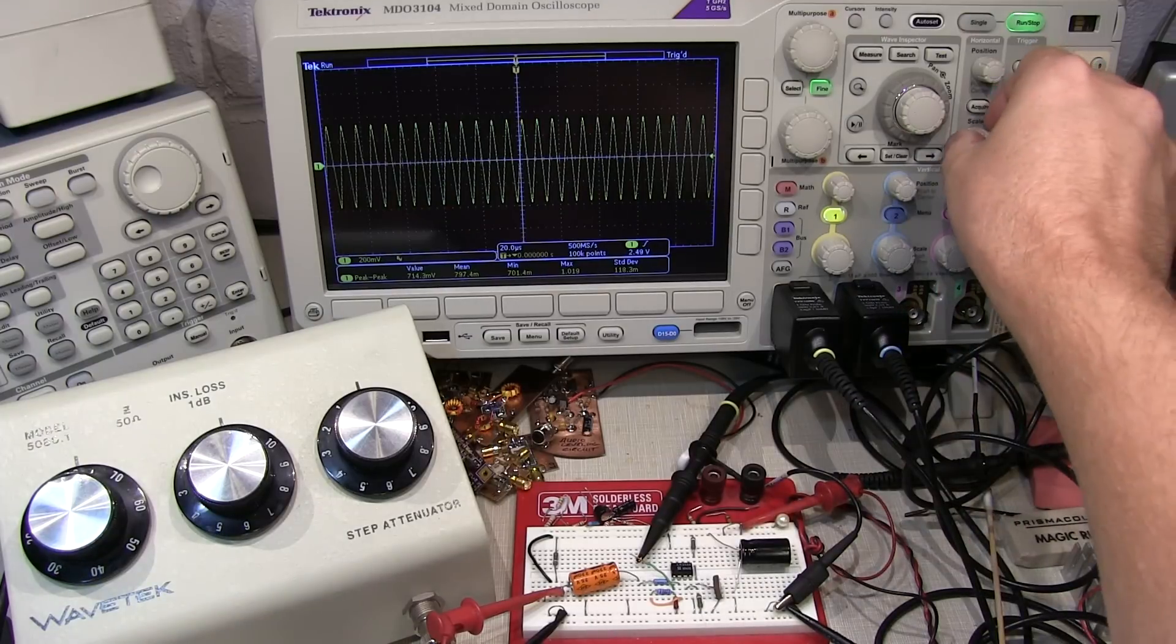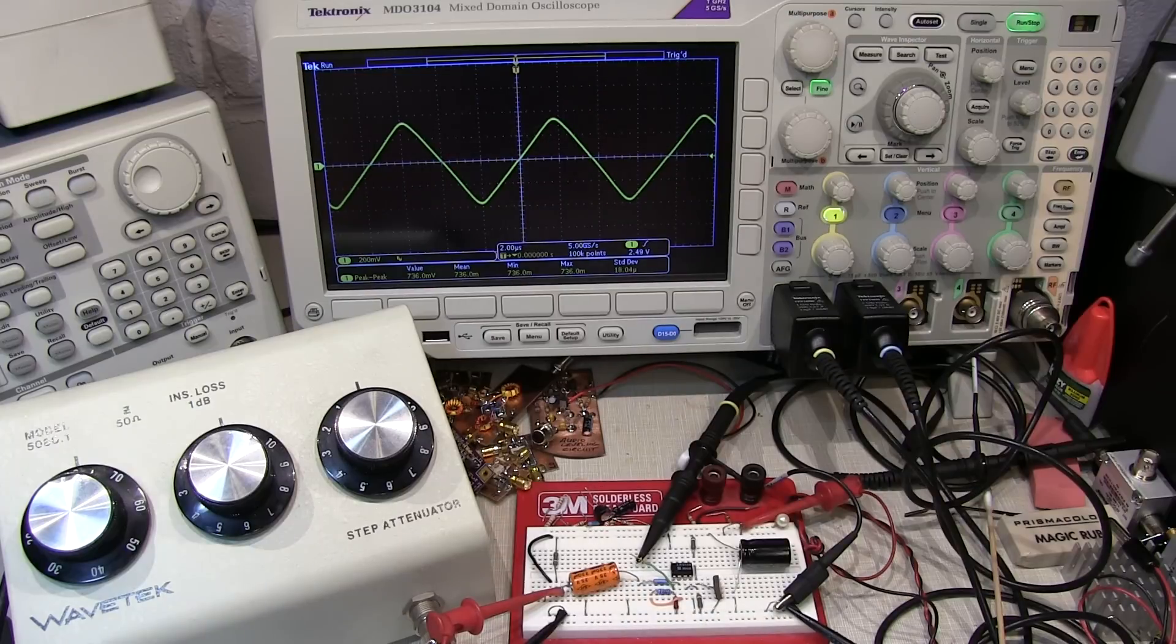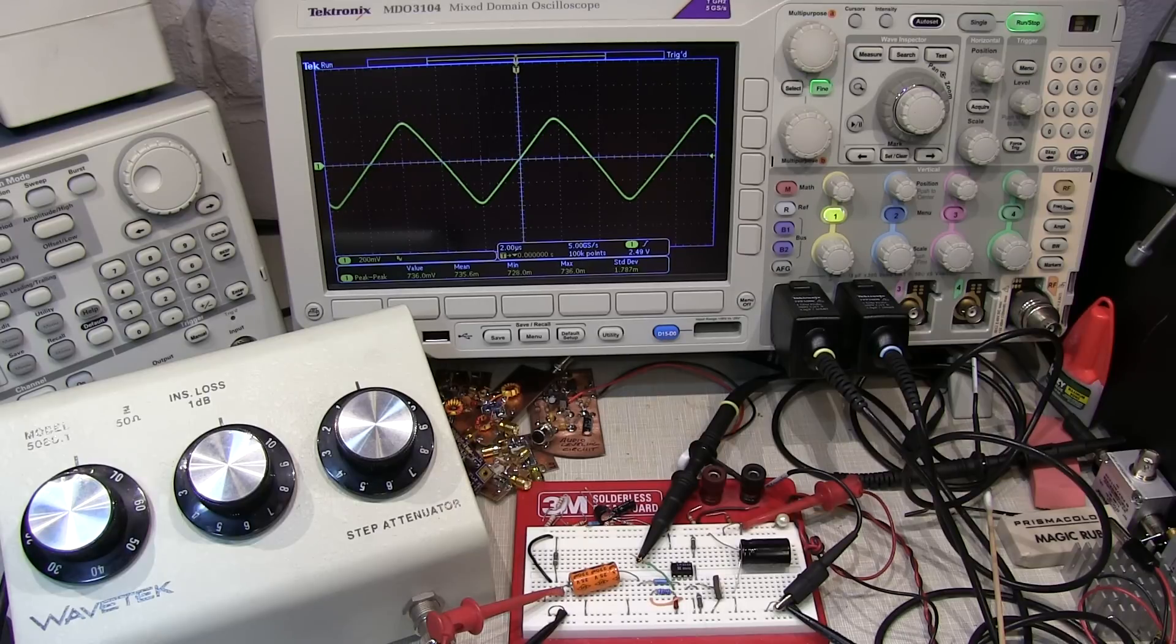Well, the key to what's going on here is that we are now being slew rate limited. Take a look at that waveform. That is no longer a sinusoid. We're now running into the slew rate limit of this op amp for this given frequency. So let's talk about what's meant by slew rate limit.